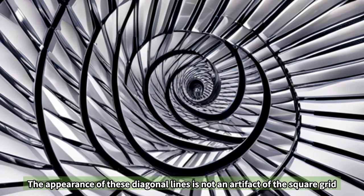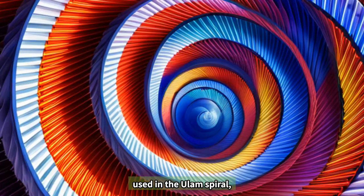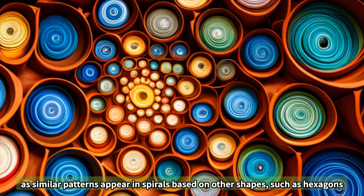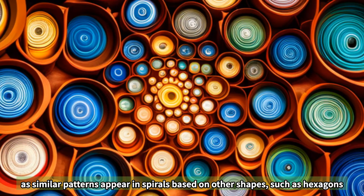The appearance of these diagonal lines is not an artifact of the square grid used in the Ulam spiral, as similar patterns appear in spirals based on other shapes, such as hexagons.